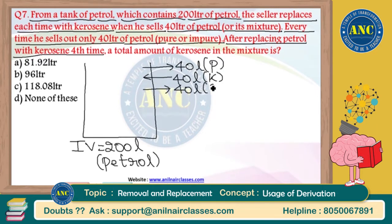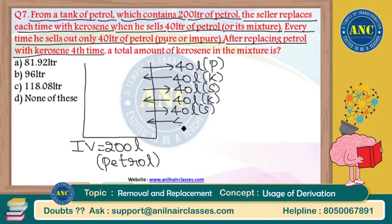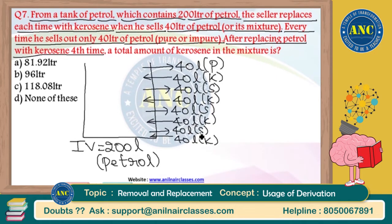After replacing petrol with kerosene for the fourth time - 40 solution taken out, 40 kerosene added, repeated four times. The total amount of kerosene in the mixture is how much? They are not asking the total amount of petrol, but the total amount of kerosene in the mixture.